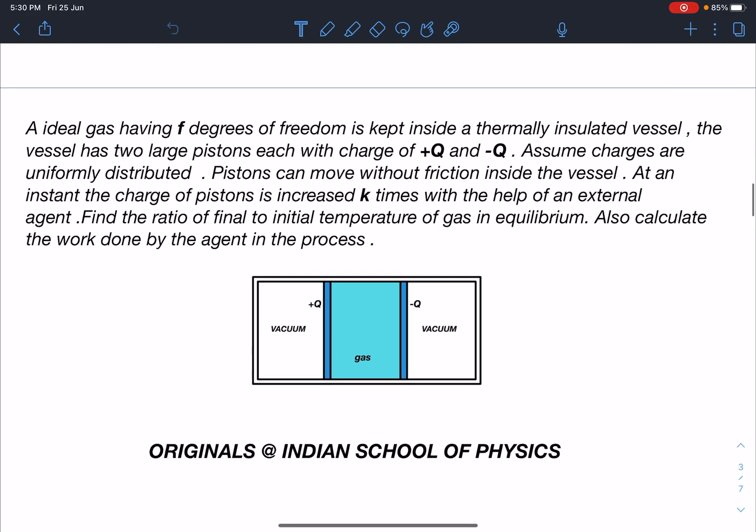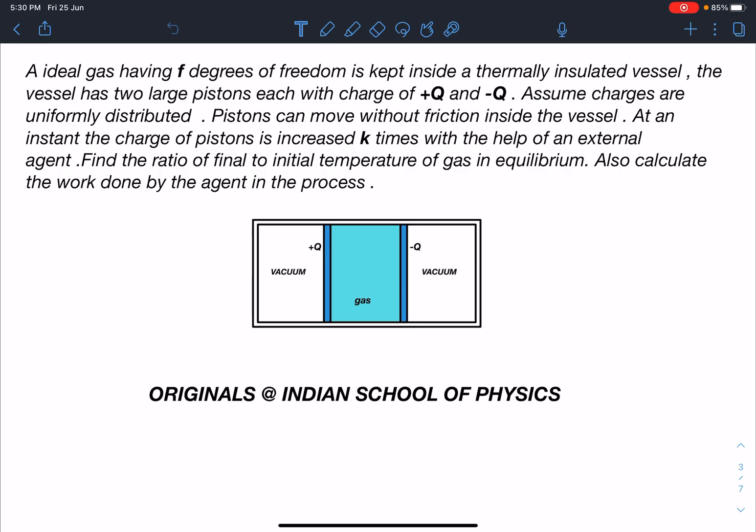An ideal gas having f degrees of freedom is kept inside a thermally insulated vessel. The vessel has two large pistons each with charge of +Q and -Q. Assume the charges are uniformly distributed. Pistons can move without friction inside the vessel. At an instant the charge of piston is increased k times with the help of an external agent. So suddenly we are increasing this charge to k times KQ and minus KQ. Then they are asking us find the ratio of final to initial temperature of the gas in equilibrium. Also calculate the work done by the agent in the process.